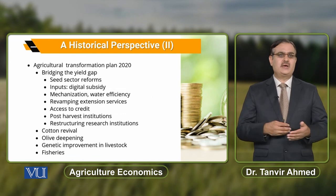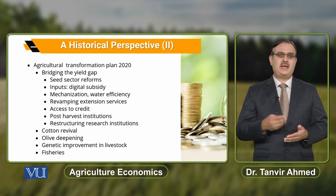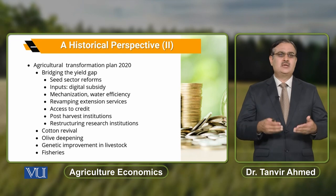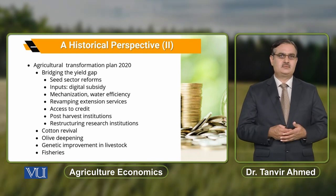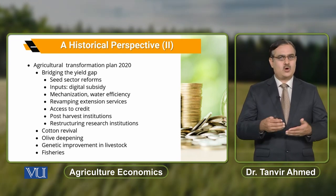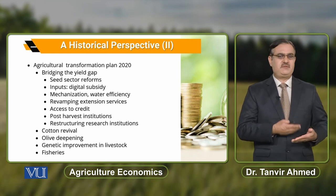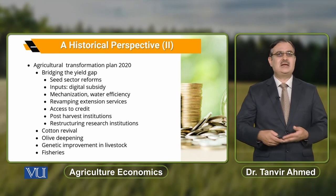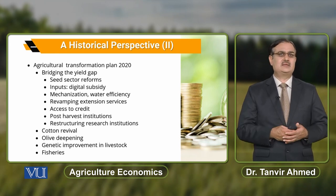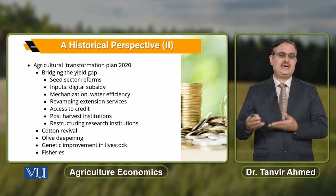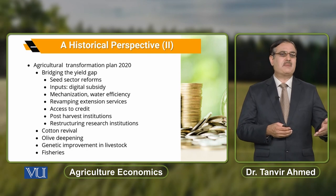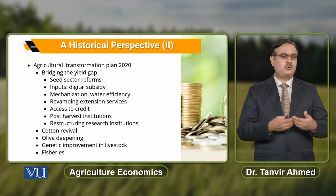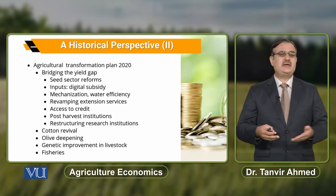In 2020, the Agricultural Transformation Plan again had the objective to bridge the yield gap between productivity in Pakistan and other parts of the world. It was identified that there was a need for seed sector reforms, and input subsidies were also introduced.